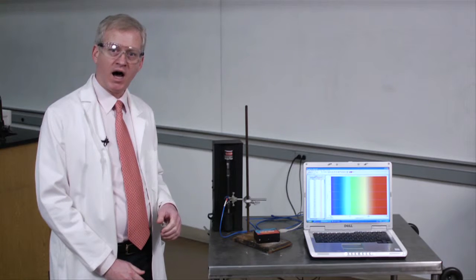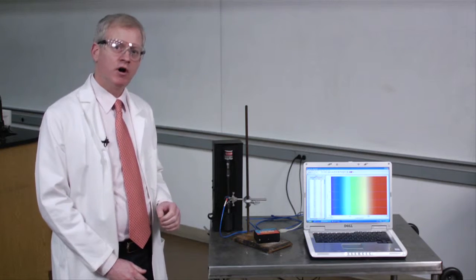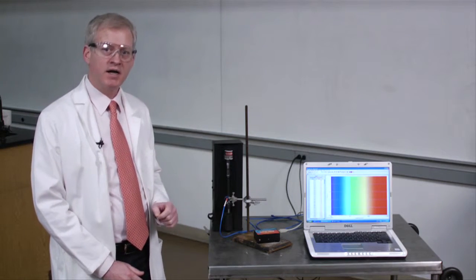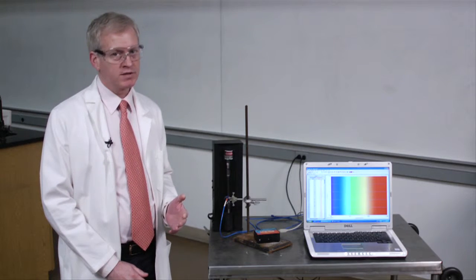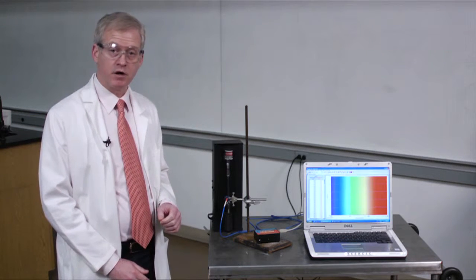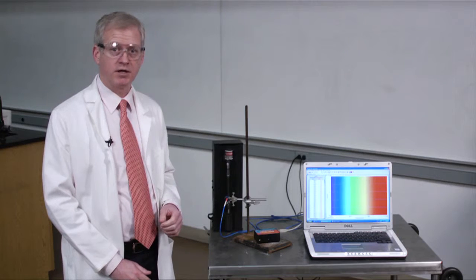When we apply a high voltage to the gas, we cause current to flow by ionizing electrons from the atoms. In the process, many atoms of hydrogen are generated in excited electronic states.